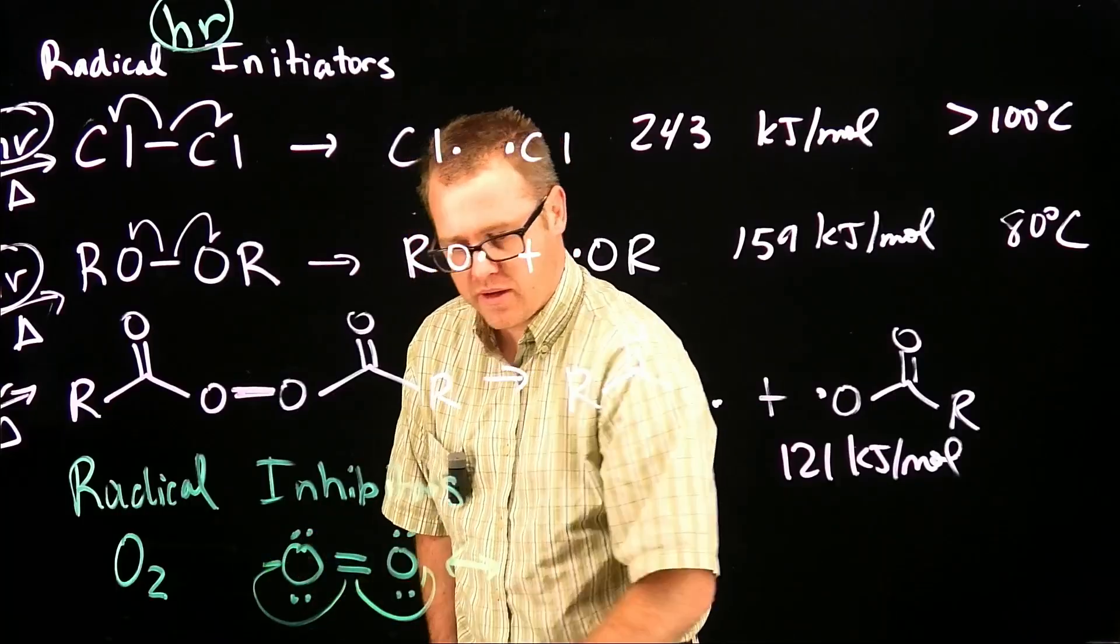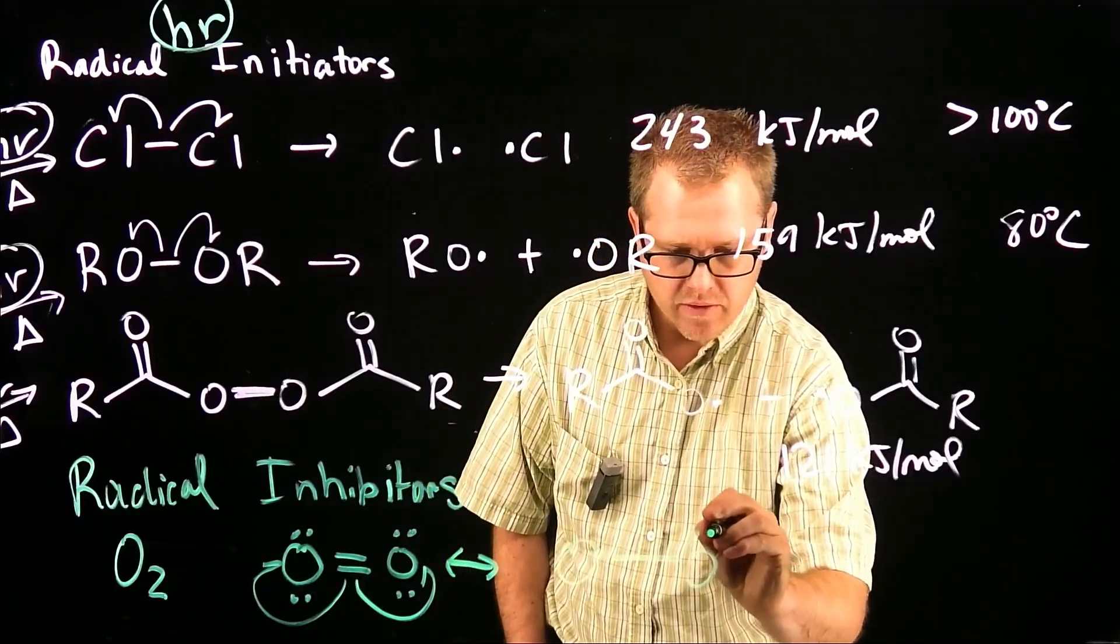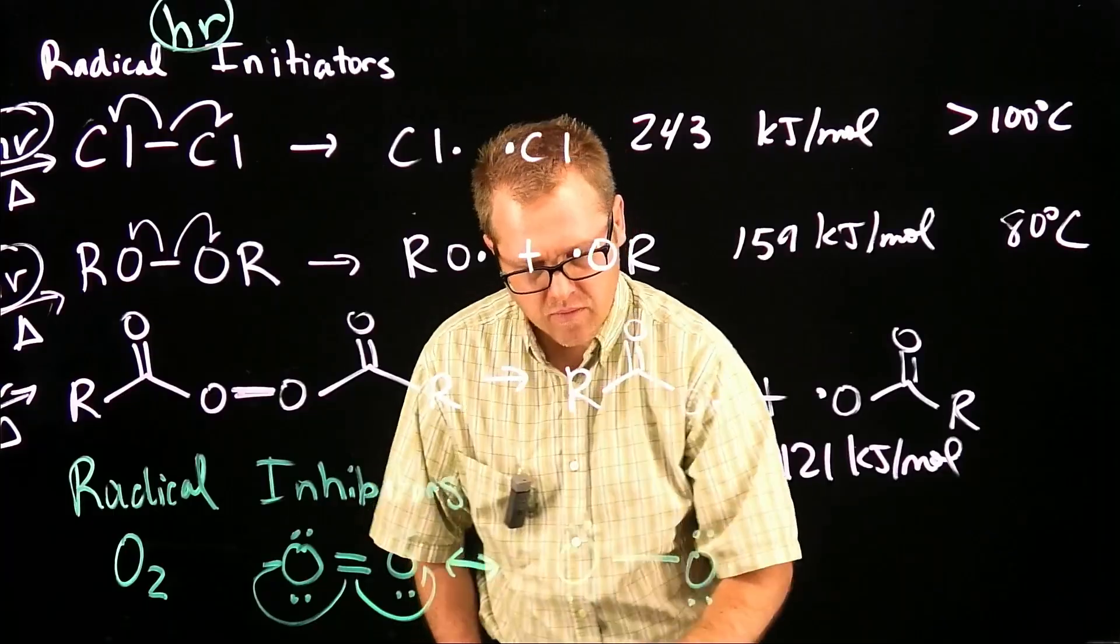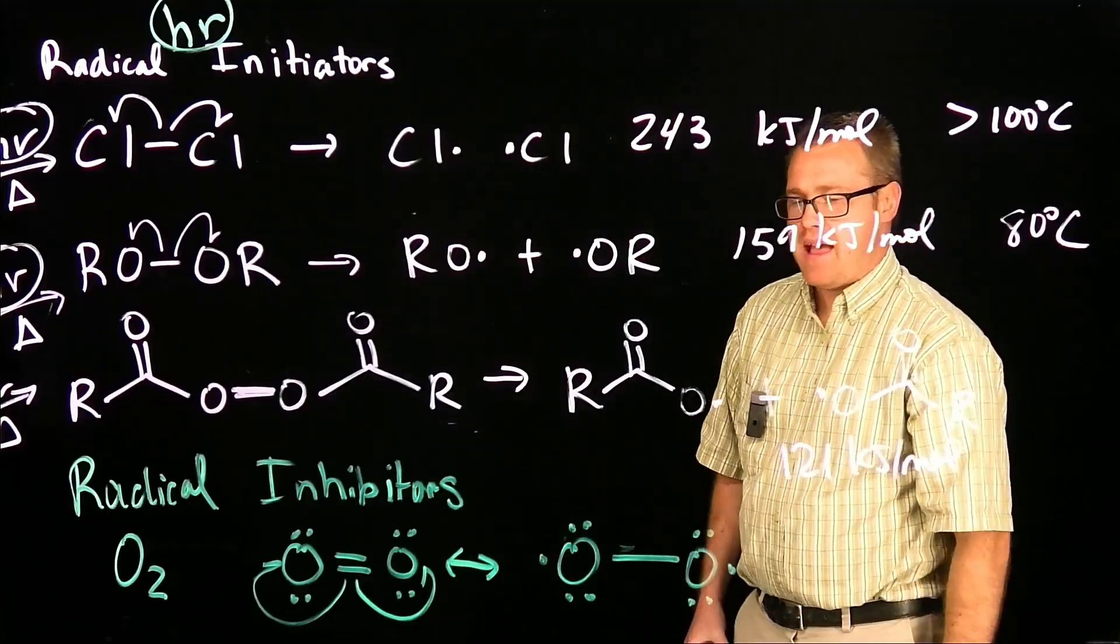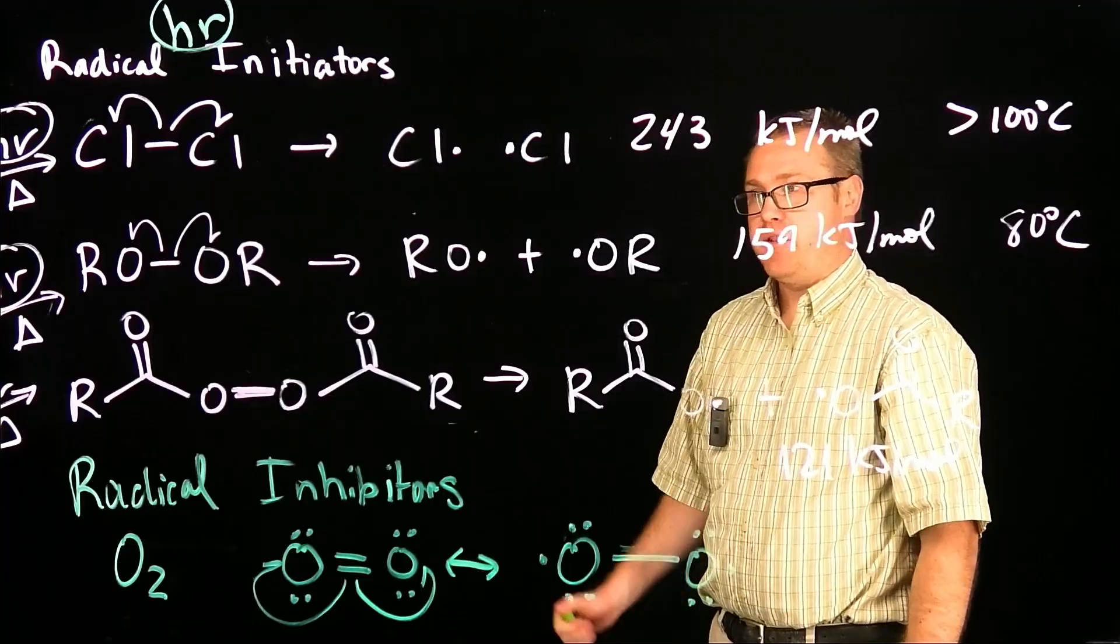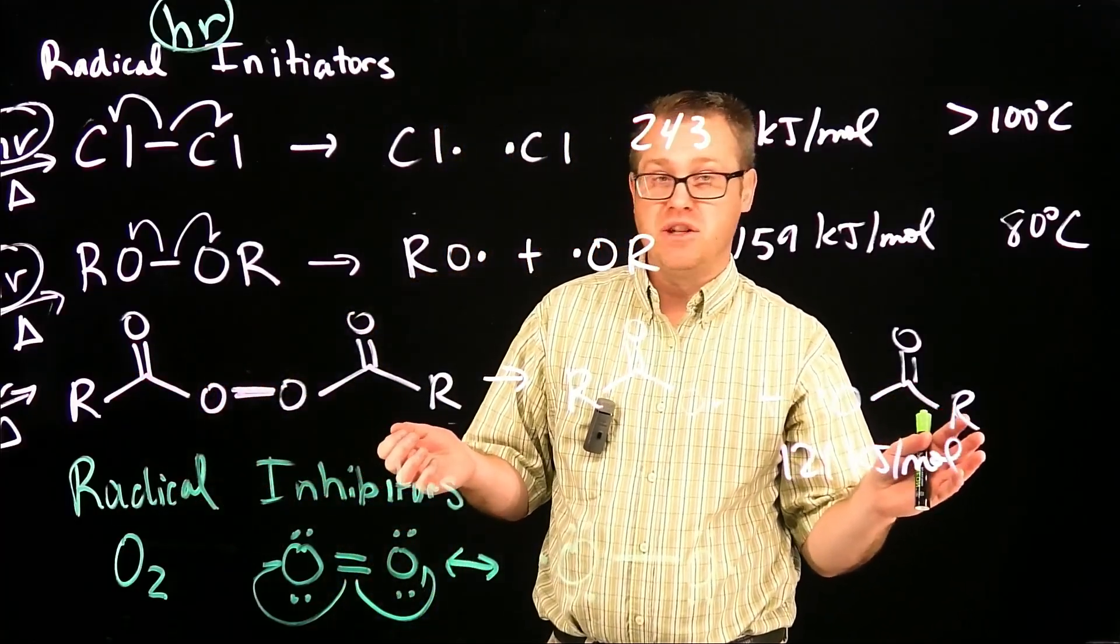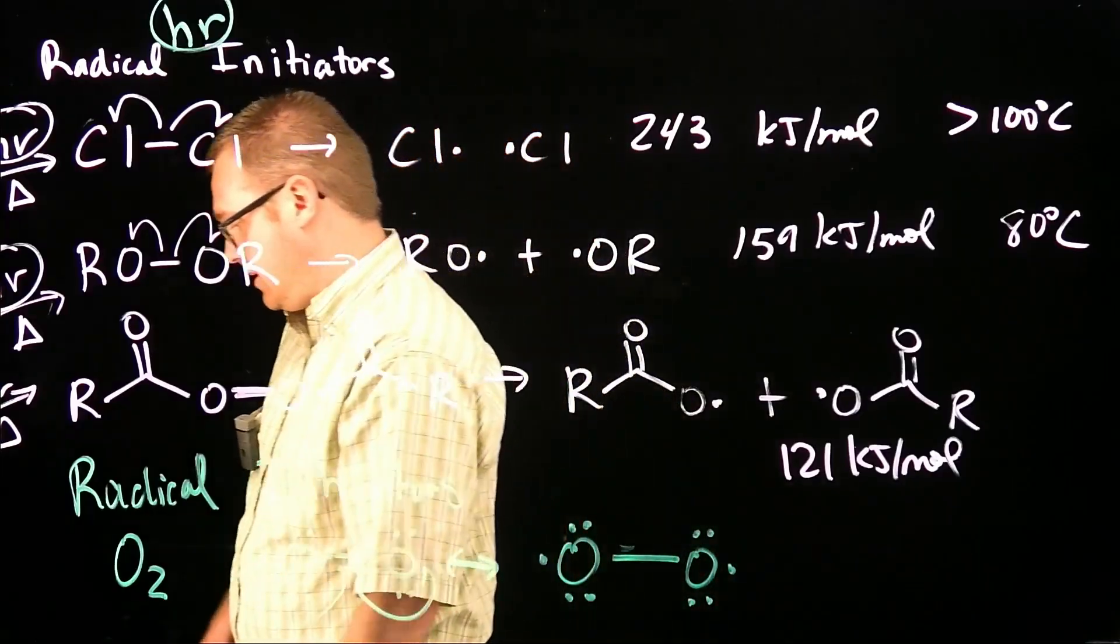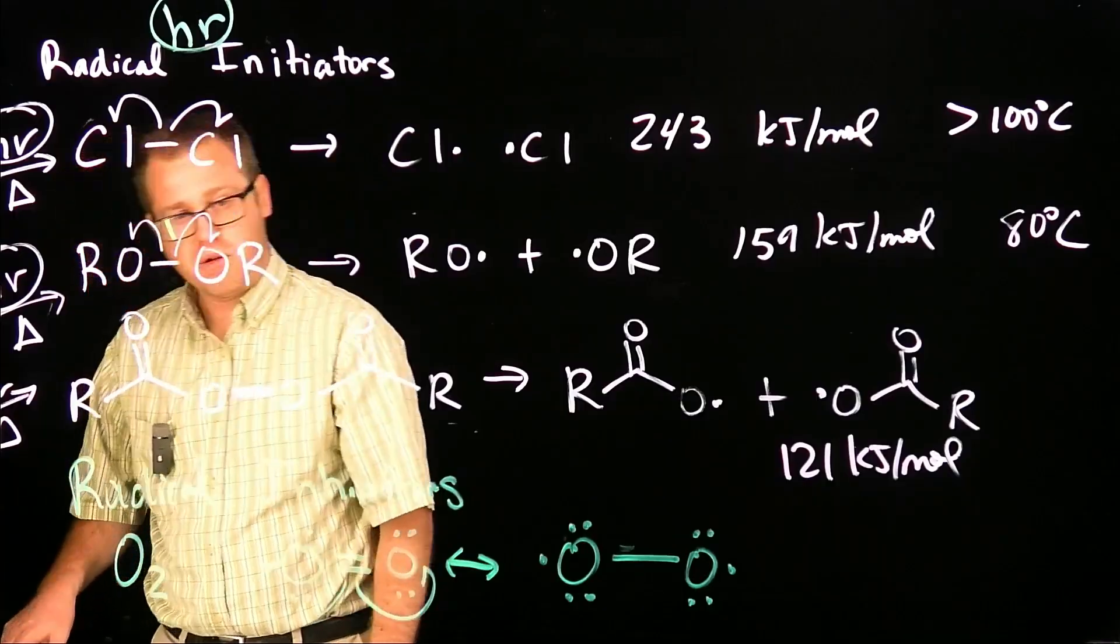But you could also represent that oxygen molecule or that Lewis structure like this. We could take one electron, put it there, and then one electron, put it there. And then we could see something that looks like this. And now that oxygen looks like a diradical. And that diradical is going to consume any radical that's in the reaction. So if you're trying to do a radical reaction, you have to remove all the elemental oxygen from the reaction because that's going to terminate the reaction.